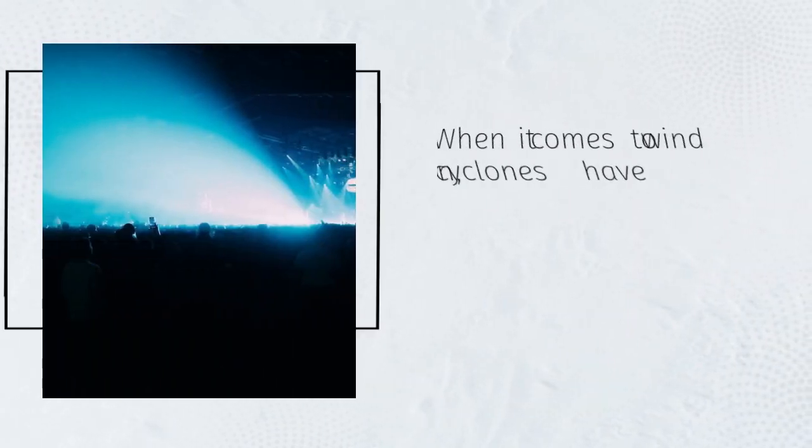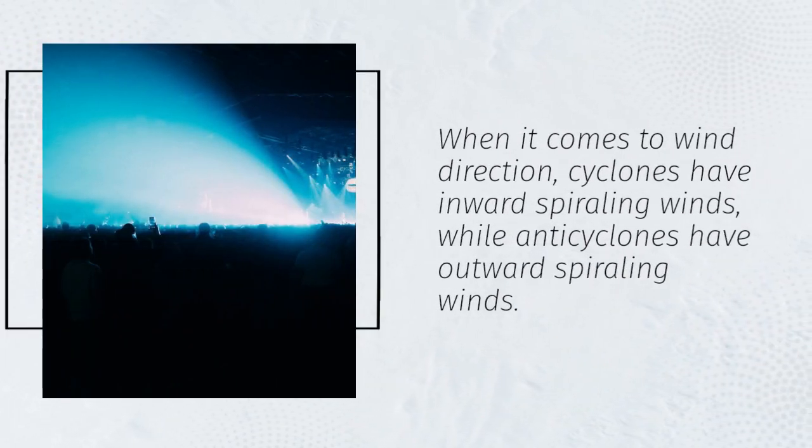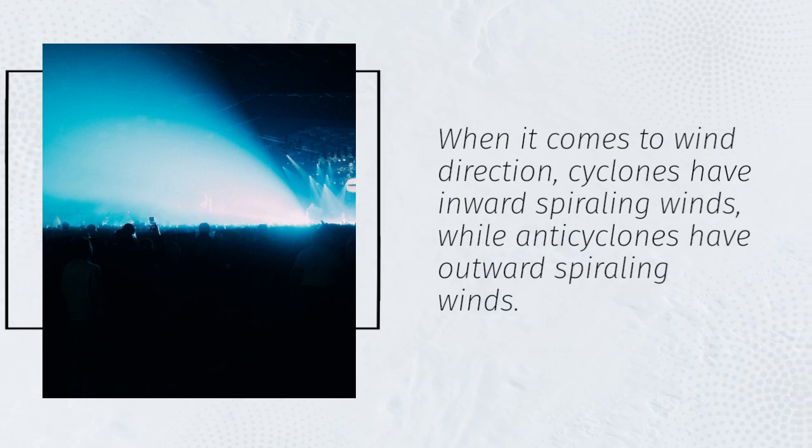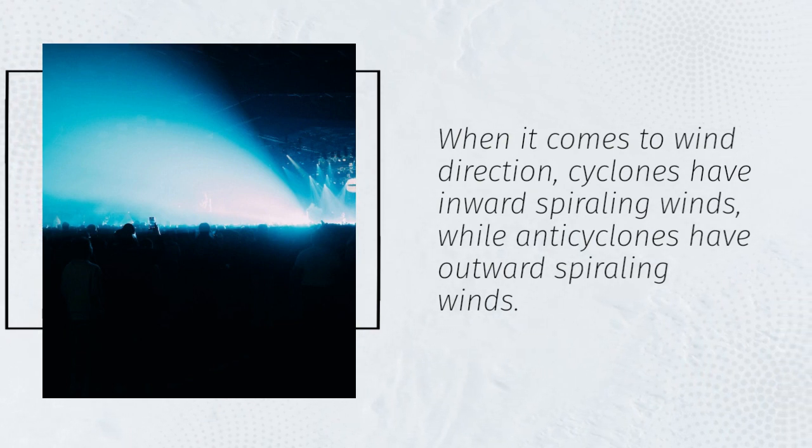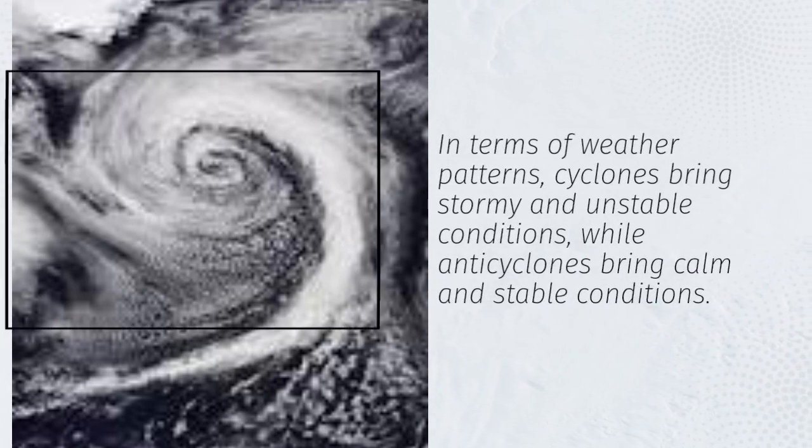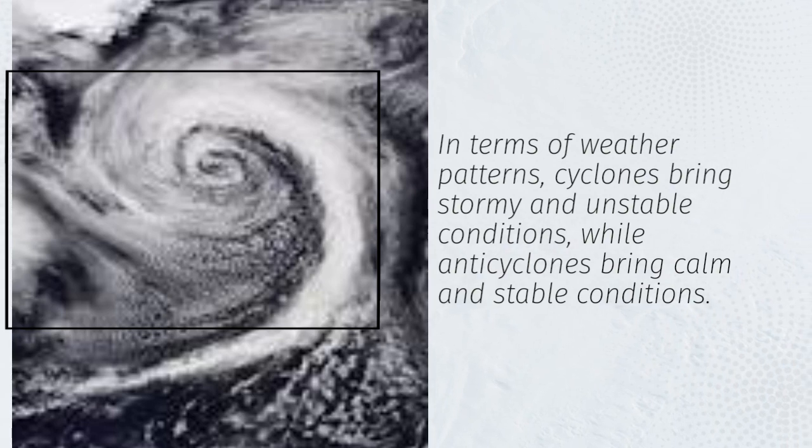When it comes to wind direction, cyclones have inward spiraling winds, while anticyclones have outward spiraling winds. In terms of weather patterns, cyclones bring stormy and unstable conditions, while anticyclones bring calm and stable conditions.